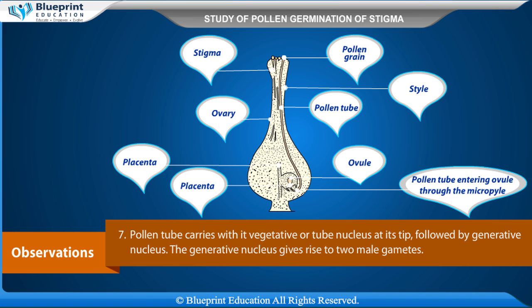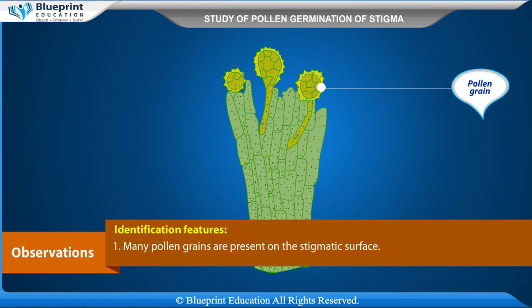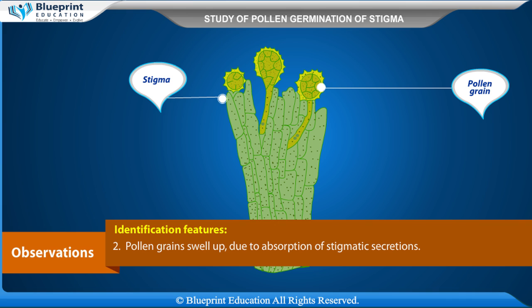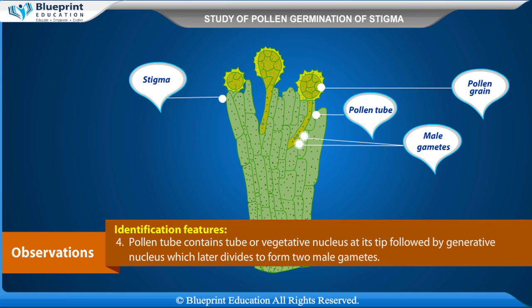Pollen tube carries with it the vegetative or tube nucleus at its tip, followed by the generative nucleus. The generative nucleus gives rise to two male gametes.